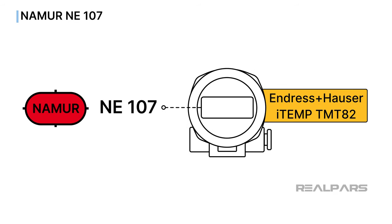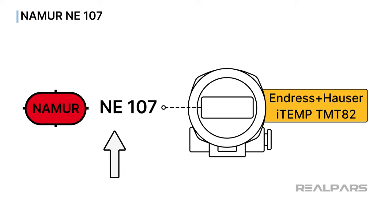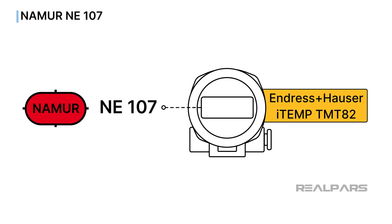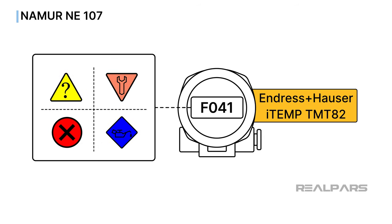Let's move on to NAMUR NE107. The Endress+Hauser iTEMP TMT82 temperature transmitter is capable of producing diagnostic status information according to NAMUR NE107. NE107 is a recognized standard detailing how to make use of smart transmitters and other smart device diagnostics. NAMUR is a group of end-users and systems integrators from European process industries. The NAMUR NE107 standard is becoming increasingly popular — perhaps most importantly because it ensures that devices provide clear and standardized error messages, facilitating quicker identification and resolution of issues.